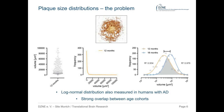To increase statistical power, we image the same population of plaques many times over several months to obtain kinetic measurements of individual plaques. For this, we applied in vivo two-photon microscopy — a technique we would like to introduce in the next slide.